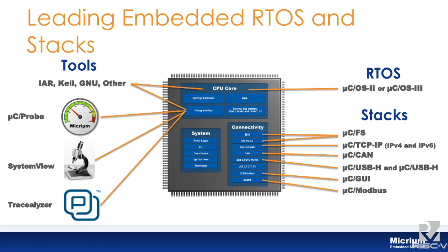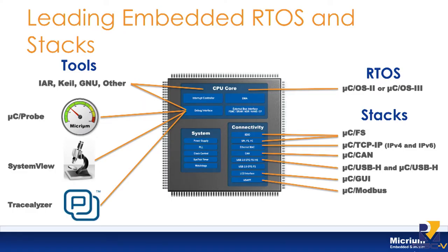The products we do at Micrium include a combination of real-time operating system, TCP/IP stack, USB host, USB device, CAN bus, Modbus, and other protocol stacks. We also have tools — one is called Micro-C Probe, a Windows application that lets you look inside your target at runtime using gauges and meters. We are also compatible with Segger's SystemView and Percepio's Tracealyzer.